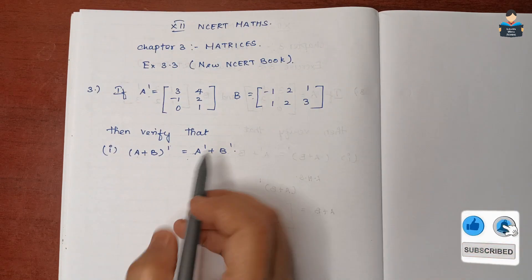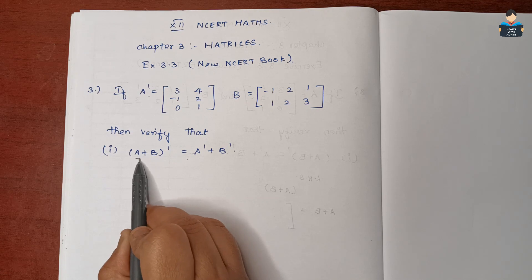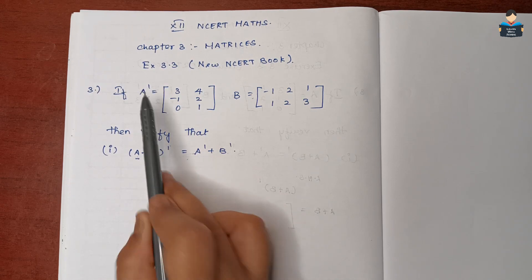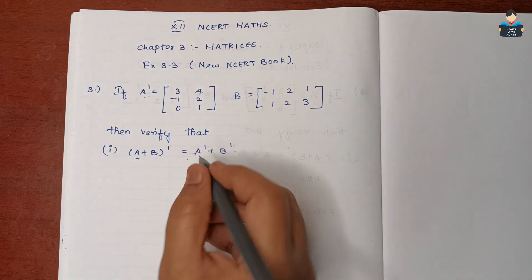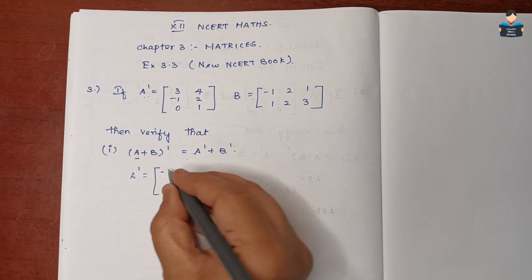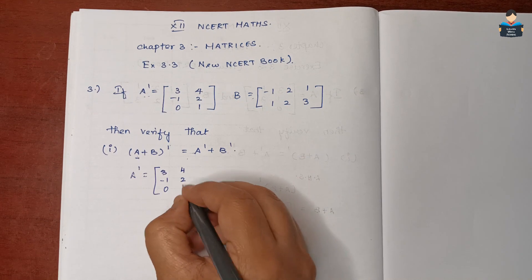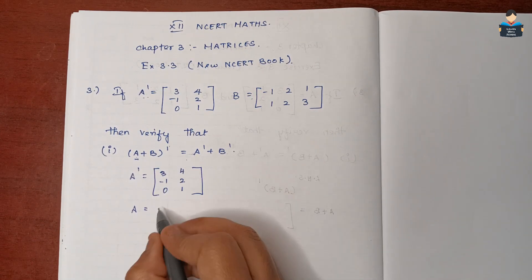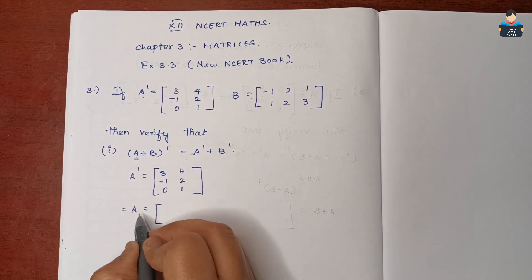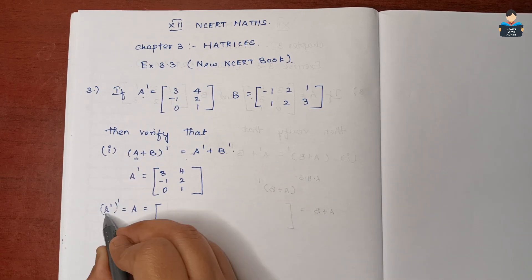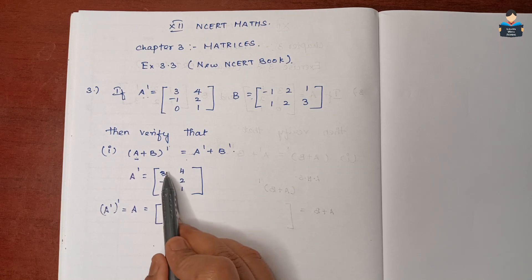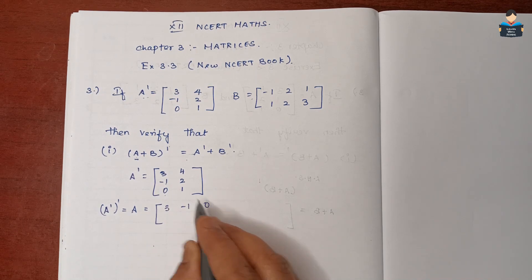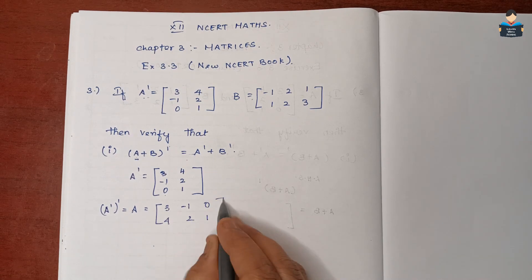First we will find A plus B, the whole transpose. So A transpose equals: 3, -1, 0 / 4, 2, 1. Then A — the difference is column wise becomes row wise — so A is the transpose of A transpose: rows 3, -1, 0 and 4, 2, 1.